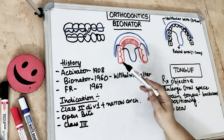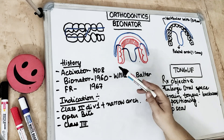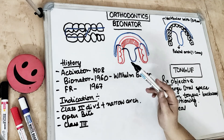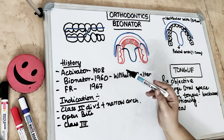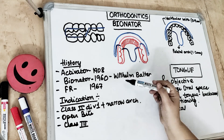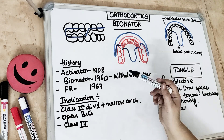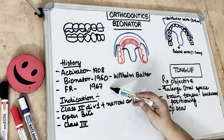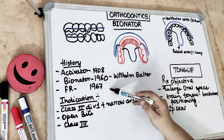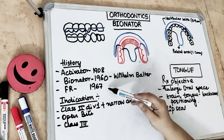Regarding the history of the Bionator: the first activator was given by Anderson in 1908, after which Wilhelm Balters in 1960 introduced the Bionator, and subsequently Frankel's appliance was described by Professor Rolf Frankel in 1967.